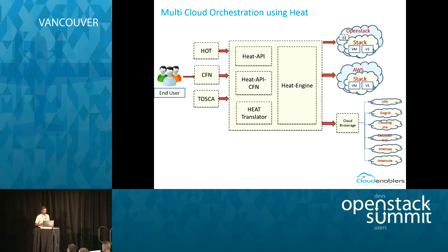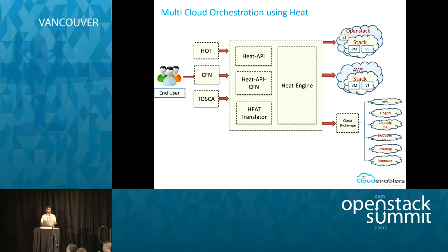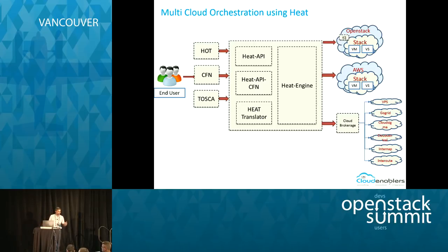Now we'll see how HEAT can be extended to support multi-cloud orchestration. Orchestration is not just about orchestrating a single instance of OpenStack. We may need an environment where we maintain orchestration as a standalone engine that orchestrates different OpenStack installations — a production setup, a QA environment, and potentially public clouds like Amazon or others.